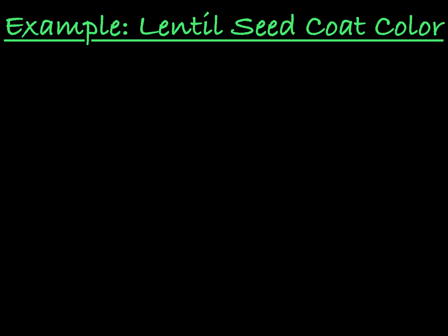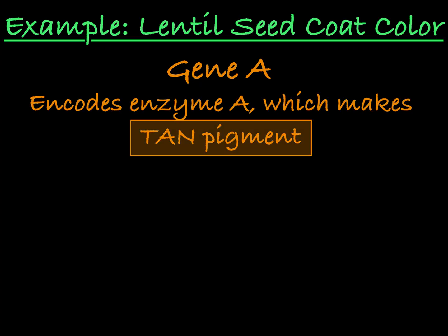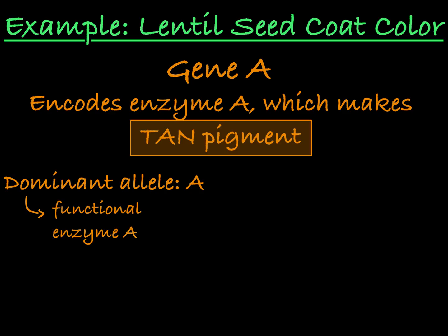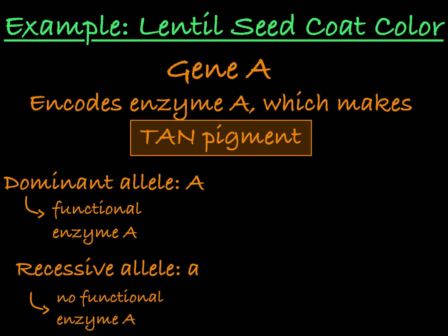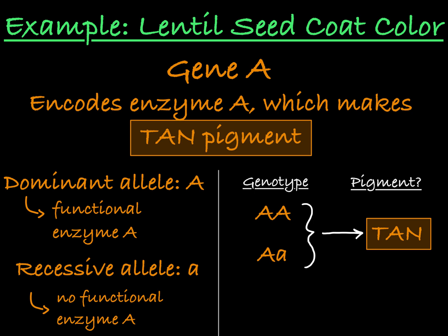The first gene, let's call it gene A, encodes enzyme A, which is able to make tan pigment. The dominant allele of gene A, let's call it big A, encodes the functioning version of this enzyme, and the recessive allele, little a, does not make a functioning version of this enzyme. So any lentil plant that has the homozygous dominant or heterozygous genotype for this gene will be making tan pigment in its seed coat. A plant that is homozygous recessive for this gene does not have the ability to make that tan pigment for the seed coat.